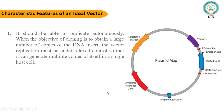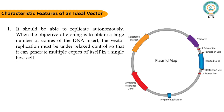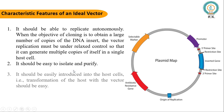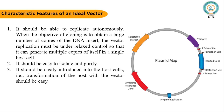Next, the characteristic features of an ideal vector. First, a cloning vector should possess an origin of replication (ORI site) so that it can self-replicate inside the host cell. Second, it should be easy to isolate and purify. Third, it should be small in size so that it can easily integrate into the host cell.